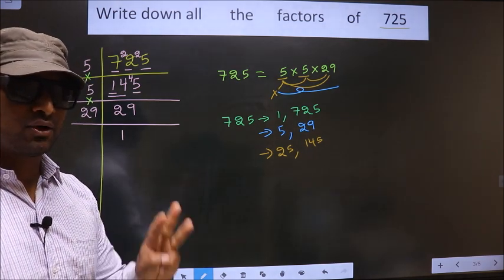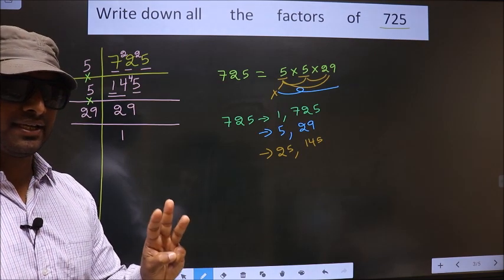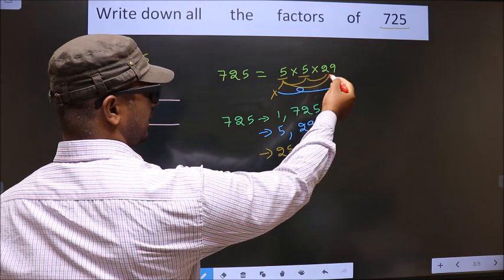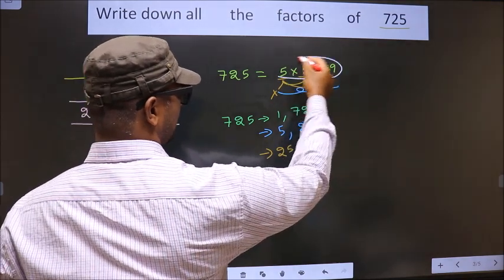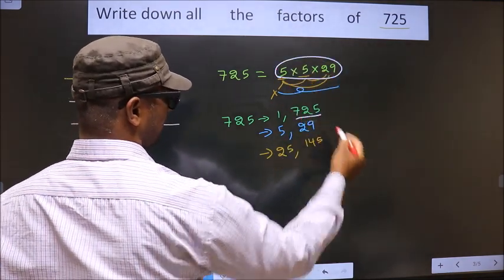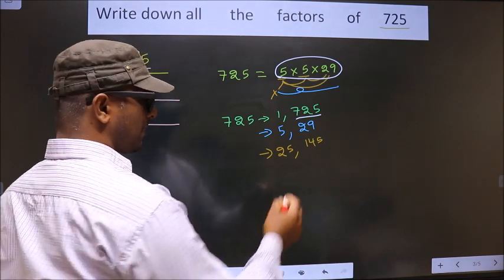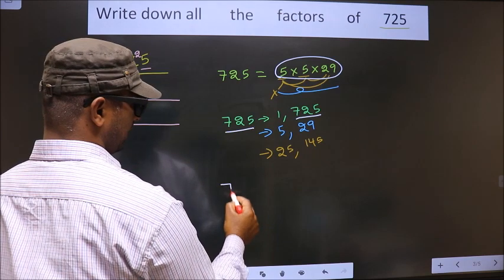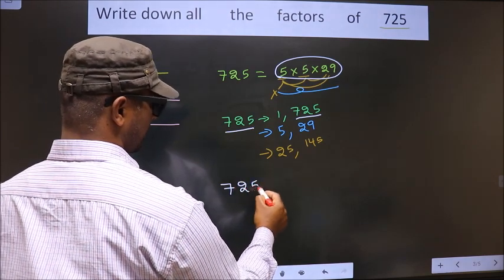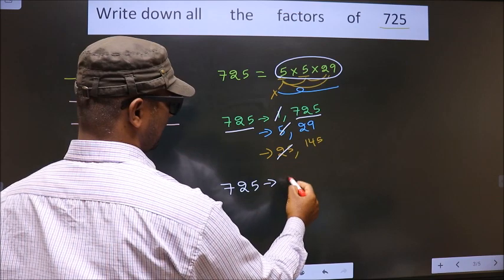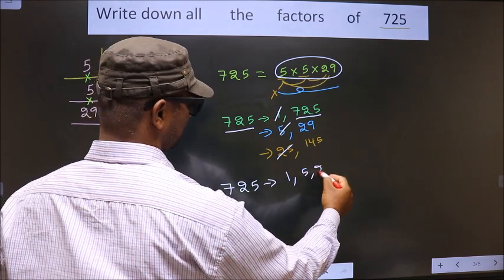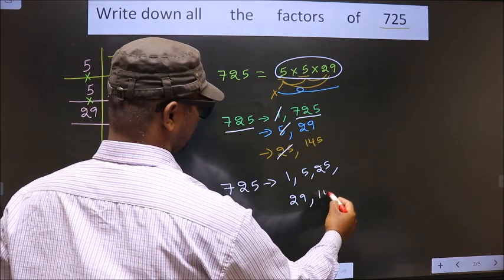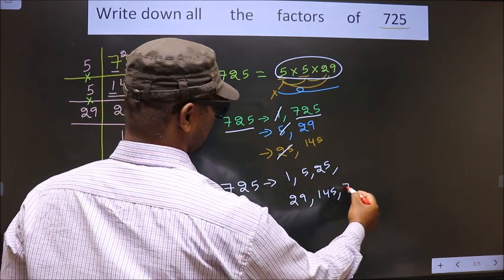Now, you take the combination of three numbers. How do we take it? Here, we have only three numbers. If we take all the three numbers, we get 725 itself. Thus, these are all the factors of 725. That is, 1, 5, 25, 29, 145, 725.